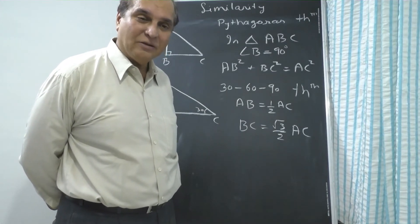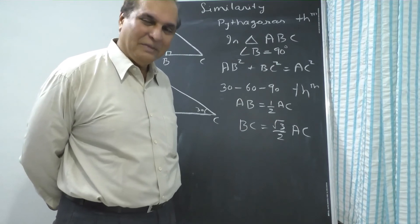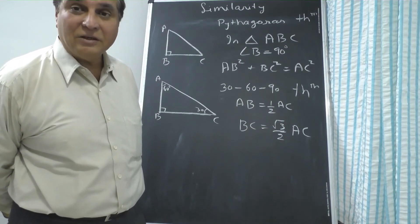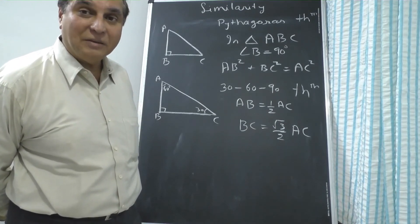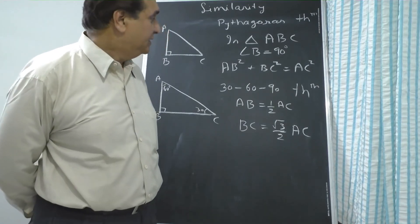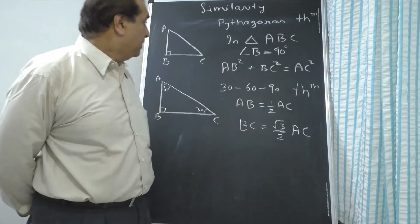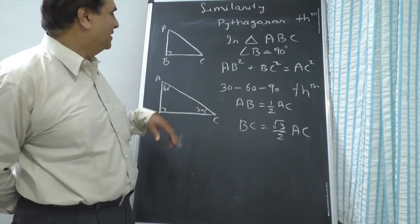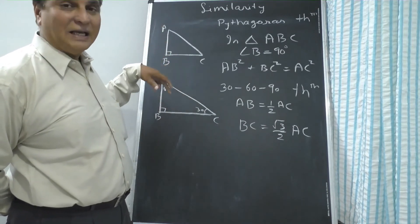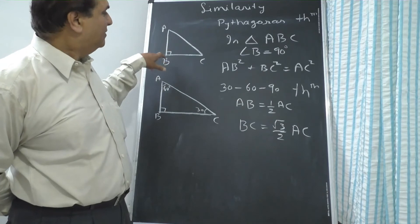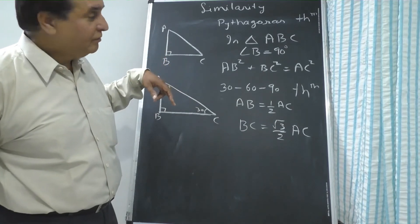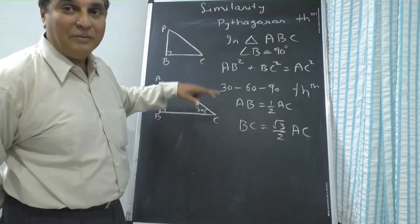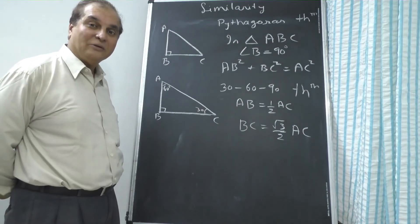Apollonius theorem will be discussed later — it is also based on Pythagoras theorem but is about medians, not right angle triangles. Regarding Pythagoras theorem: in triangle ABC, if angle B equals 90 degrees, then AC is the hypotenuse. The sum of squares of the two sides — AB squared plus BC squared — equals the square of the hypotenuse AC. This is Pythagoras theorem.